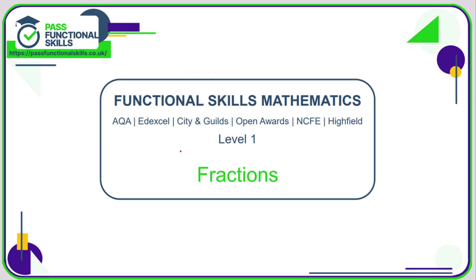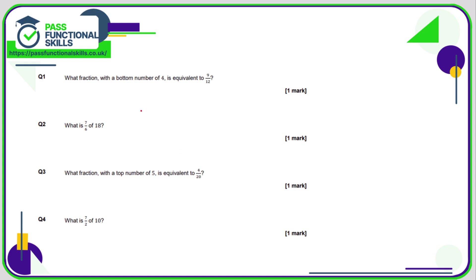Let's take a look at the fractions questions — all of these questions are non-calculator. Question one: what fraction with a bottom number of four is equivalent to nine twelfths? We want an equivalent fraction with a bottom number of four, so we need to think: what do you do to turn a 12 into a four? You divide by three. For an equivalent fraction, if you're dividing the bottom by three, you also divide the top by three. Nine divided by three is three, so three quarters is the same as nine twelfths.